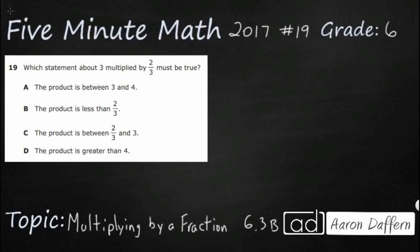So we need to find a statement that is true about this problem: 3 multiplied by 2 thirds. Let's just figure out what that is. Fraction multiplication is very simple — you multiply straight across. You don't have to worry about common denominators like you do with adding and subtracting.